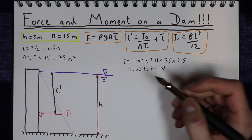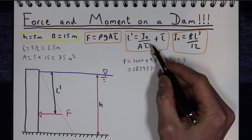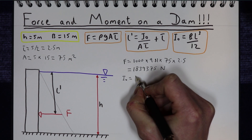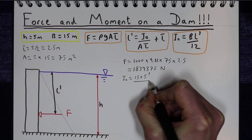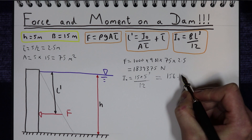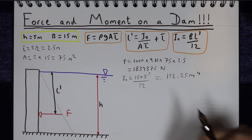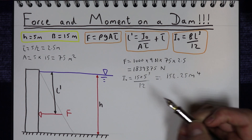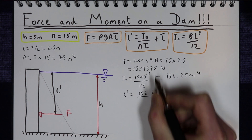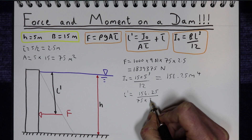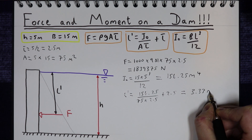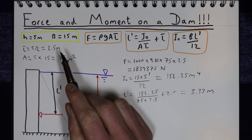The next thing we need is the point at which the force acts, L', using the equation. First we calculate the second moment of area: I₀ equals the width of 15 times the height of 5 to the power of 3, over 12, which gives 156.25 metres to the power of 4. Plugging that into the equation for L' gives a value of 3.33 metres, which as expected is the same as 2/3 of our total height.